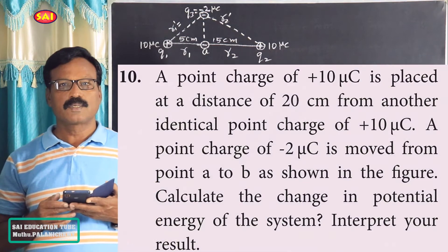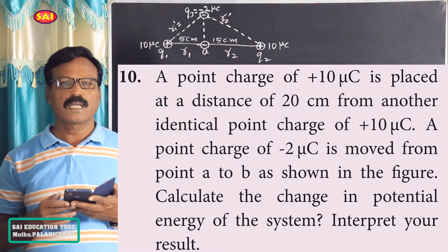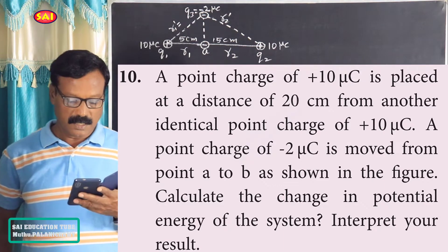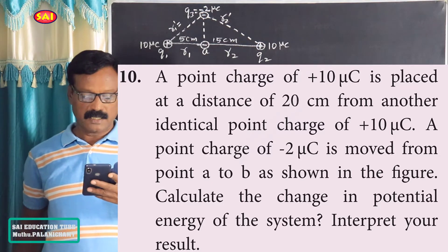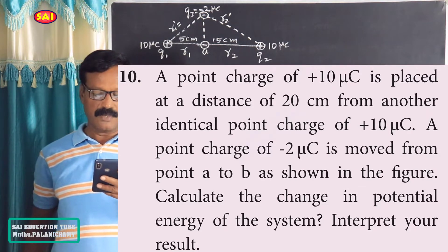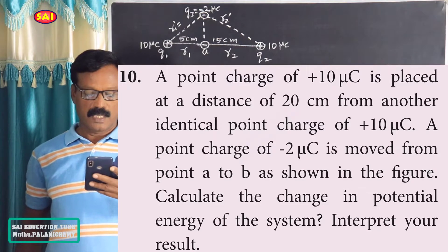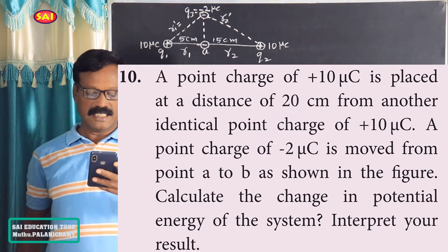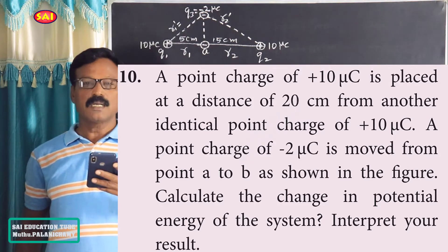In this video, we will look at 12th standard physics unit 1 electrostatics exercise problem 10. A point charge of +10 microcoulomb is placed at a distance of 20 cm from another identical point charge of +10 microcoulomb. A point charge of -2 microcoulomb is moved from point A to B as shown in figure. Calculate the change in potential energy of the system and interpret your result.